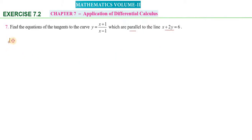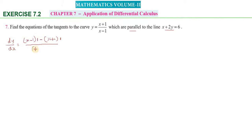First, find dy/dx. We apply the u by v method — that is, the quotient rule: v into du minus u into dv, all divided by v square. Here u equals x plus 1 and v equals x minus 1.